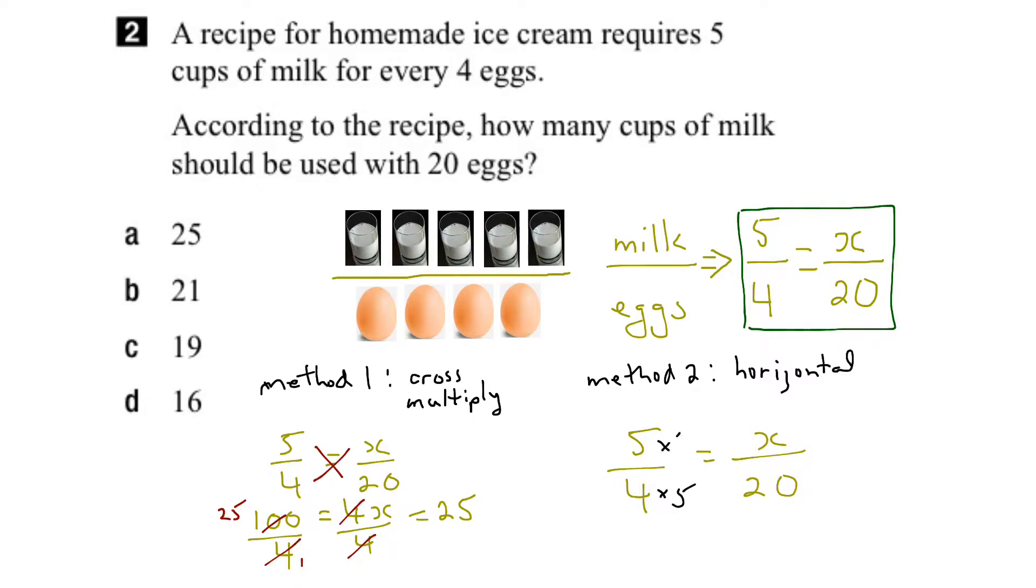So in this case, we'd also have to multiply the top by 5. So 5 times 5 is 25. And again, 4 times 5 is 20. What we can see here is that these 20s match. So therefore, x must be 25.